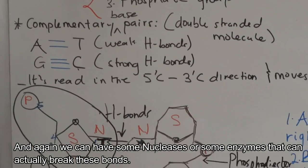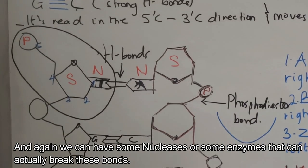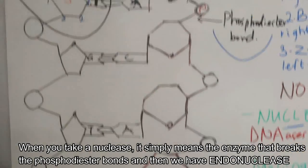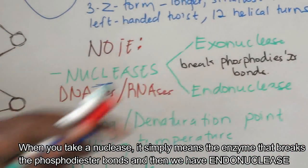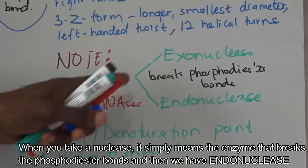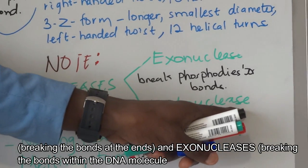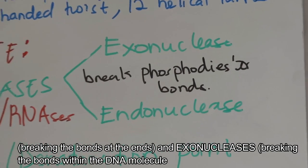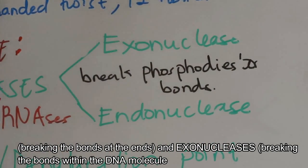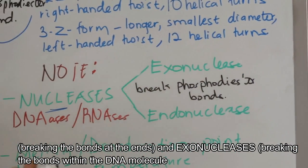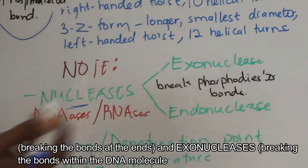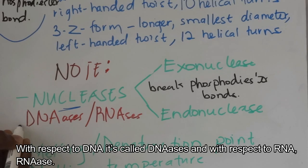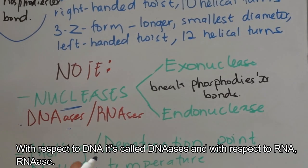We can have nucleases — enzymes that can actually break these bonds. A nuclease is an enzyme that breaks the phosphodiester bond. We have exonuclease and endonuclease: if the breaking point is at the ends we call it exonuclease, and if the bond has to be broken within the strand we call it endonuclease. If it is with respect to DNA we call it DNase; if it is with respect to RNA we call it RNase.